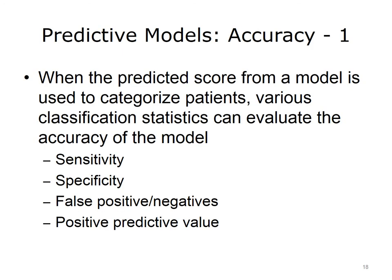In predictive modeling, it's typical to use the predicted score to categorize patients into different types. For instance, all patients with a risk score above a threshold of 90 on a scale of 0 to 100 may be considered high risk. The most common measures are sensitivity, or percent of true positives — those being high risk that were predicted to be high risk — and specificity, which refers to how well the predictive model rules out negatives, or patients who are not high risk. Specificity is calculated as the percentage of true negatives that were predicted as negative.